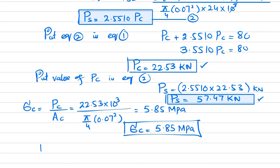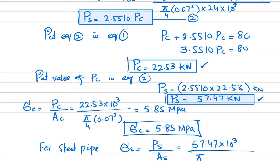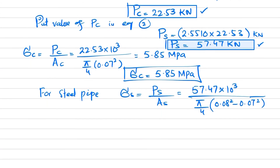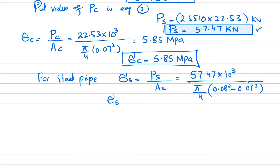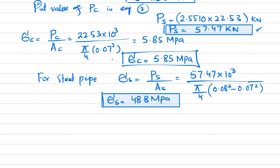For the steel pipe: σ_s = Ps / As = (57.47 × 10³) / [(π/4)(0.08² − 0.07²)]. Solving this gives the average stress in the steel pipe as 48.8 megapascals. This is the answer to part one (concrete) and part two (steel).